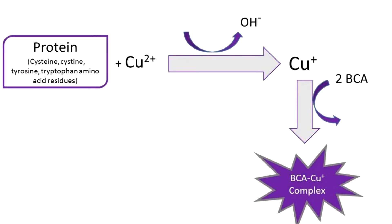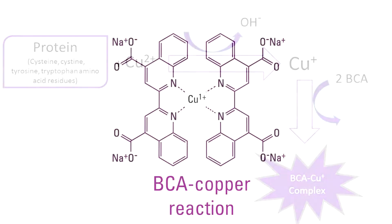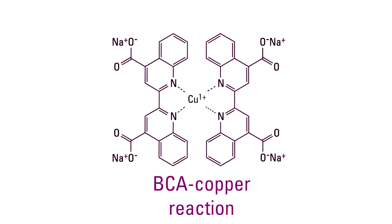The BCA assay primarily relies on two reactions. First, the peptide bonds of your protein reduce copper-2 ions to copper-1, which is a temperature-dependent reaction. The amount of copper-2 reduced is proportional to the amount of protein present in the solution. Next, two molecules of BCA chelate with each copper-plus ion forming a purple-colored complex that strongly absorbs light at a wavelength of 562 nanometers.